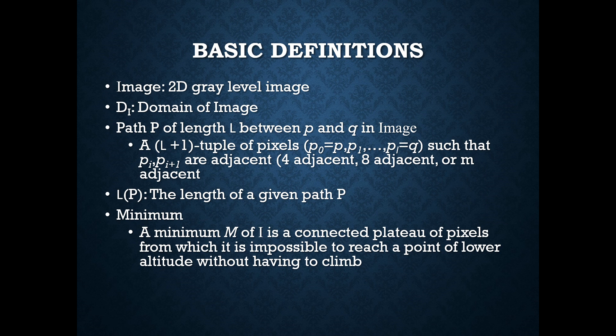Path P of length capital L between p and q of an image A of L plus 1 is a tuple of pixels from P0 to Q such that P and PI plus 1 are adjacent. We have three types of adjacent: 4 adjacent, 8 adjacent and M adjacent.